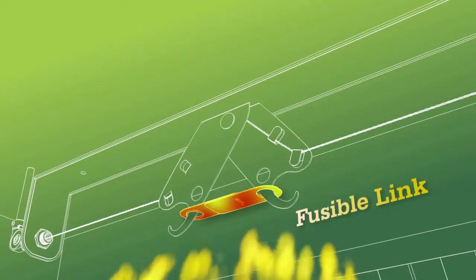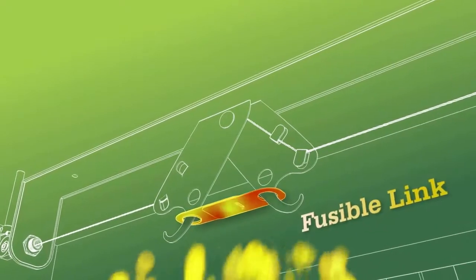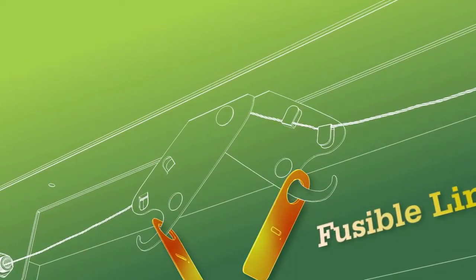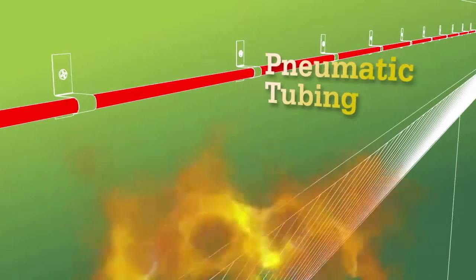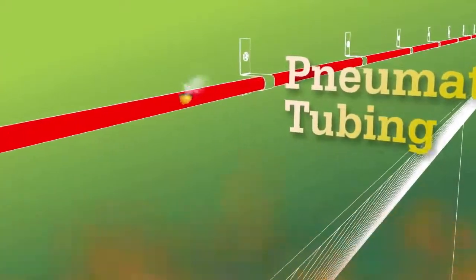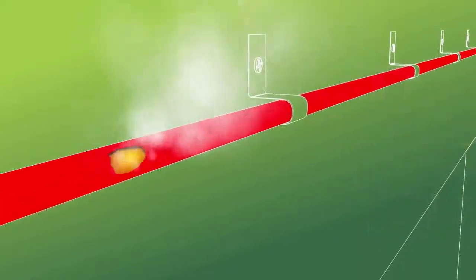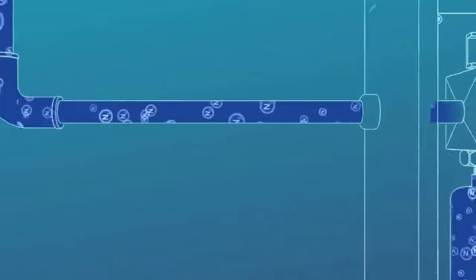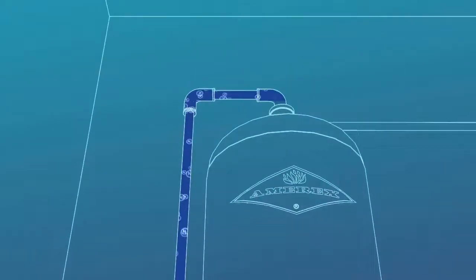But if there's no one to pull the handle, an Amerex system still provides peace of mind. The systems are automatic, either with fusible link or pneumatic fire detection. Both methods trip the system automatically when heat from a fire activates the detection device. This action punctures the nitrogen cylinder, releasing gas that opens the agent cylinders while closing the gas valve.